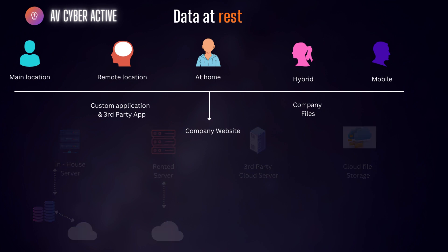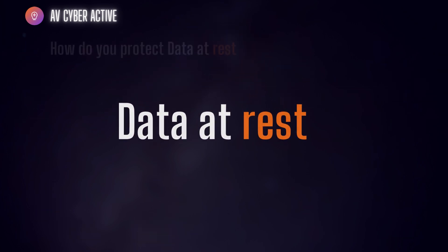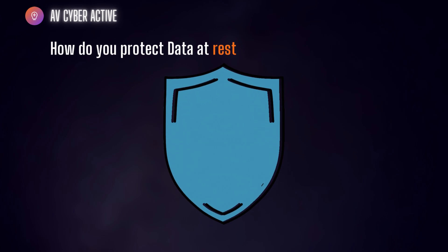Information is generated from your main location, remote, home, hybrid, or mobile location, and it gets stored in your in-house server, rented server, third-party cloud server, or even cloud file storage. Anytime data is generated by end users, it is stored in one of these servers where the data rests — that's why it's called data at rest. You would have to put in appropriate protection mechanisms to protect that data.